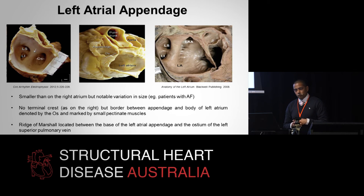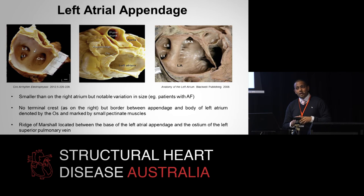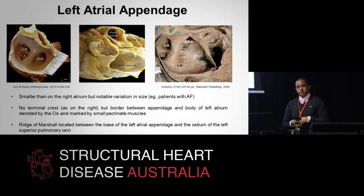The left atrial appendage is obviously smaller than the right, but there is notable variation in size — for example in patients who have AF with an enlarged left atrium. There is no terminal crest in the left atrium as there would be in the right with the crista terminalis; instead, the border between the appendage and the body of the left atrium is denoted by the os. Prominently, there is the ridge of Marshall — Coumadin's ridge — between the base of the left atrial appendage and the ostium of the left superior pulmonary vein. This is the Q-tip sign on transesophageal echocardiogram and can sometimes be mistaken for a thrombus in the left atrial appendage.